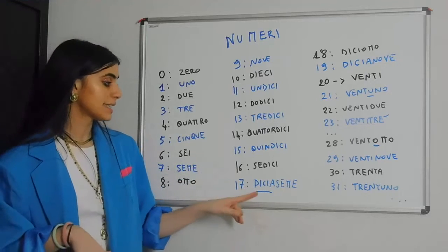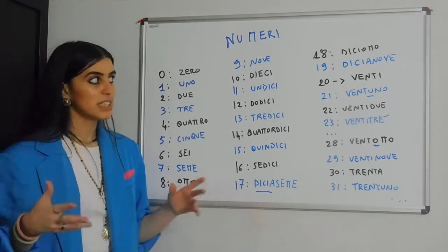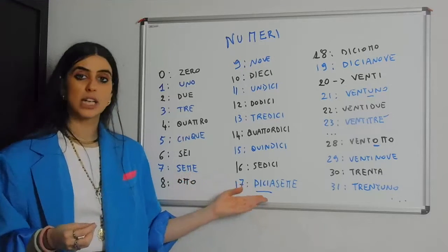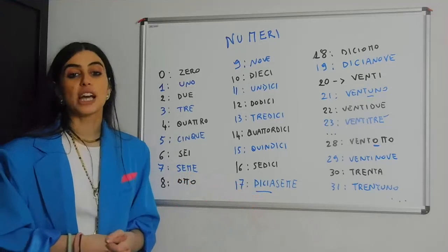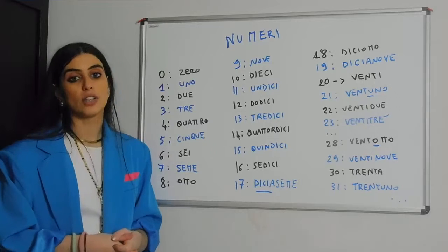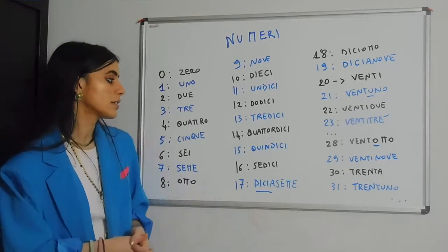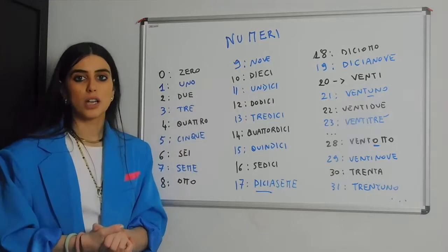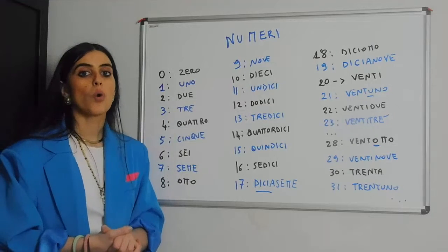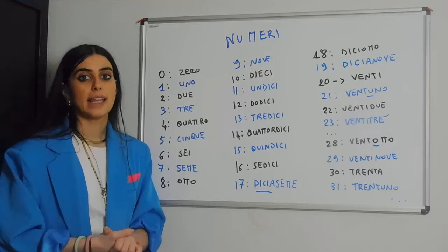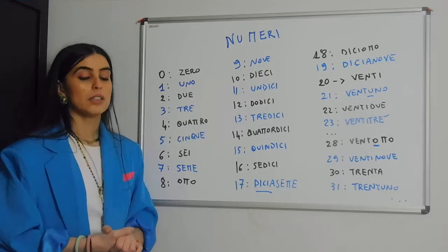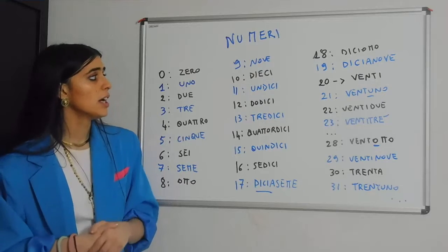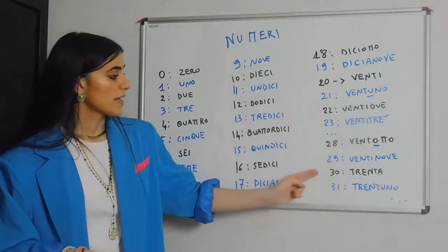From 17 to 19 we change a little bit. This time around we're going to have 'dici' — the contracted version of 'dieci' — first, and then the number. So we have: diciassette, diciotto, diciannove, and then finally venti. Let's go one more time from 11 to 20: undici, dodici, tredici, quattordici, quindici, sedici, diciassette, diciotto, diciannove, venti.